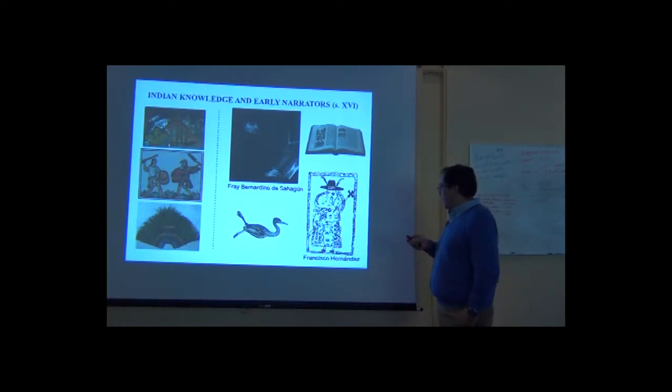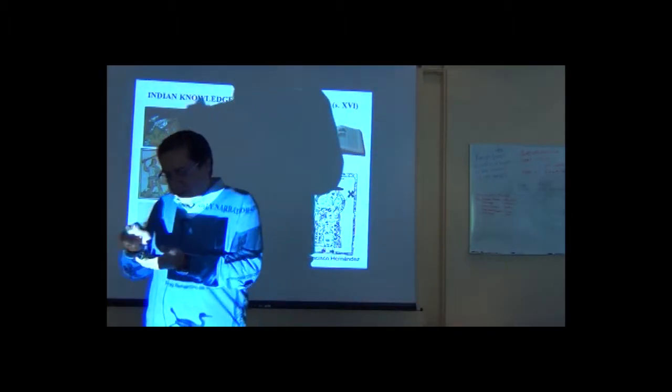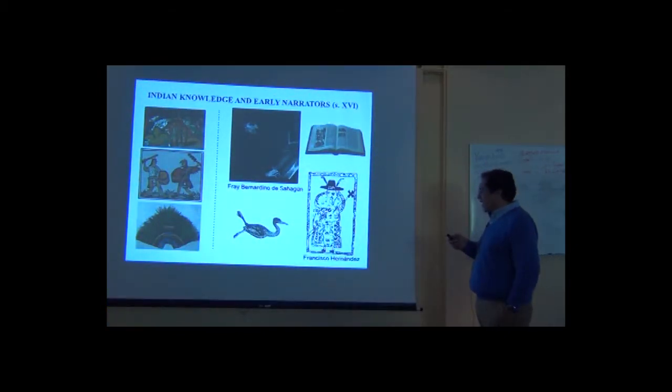This guy was Francisco Hernandez. He was the doctor of Philip the Second, and the indigenous people in Mexico called him 'the asker.' I can imagine the guy with his notes following people asking, 'What do you use this bird for? What do you use this plant for?' So they called him the asker, and he produced a very important work on the biodiversity of New Spain, which was the name of Mexico in those times. It was a huge volume of notes about animals and plants.